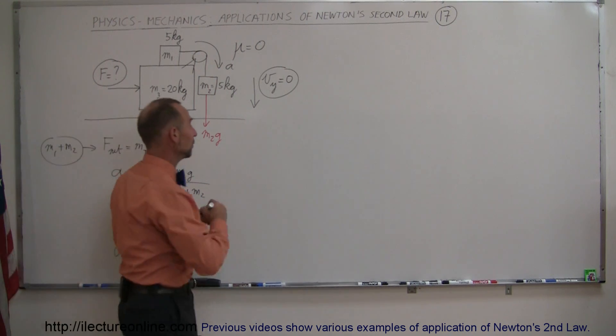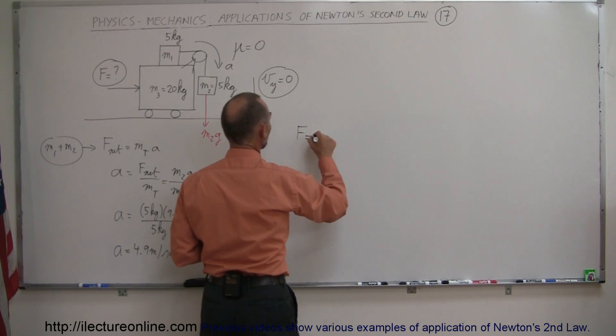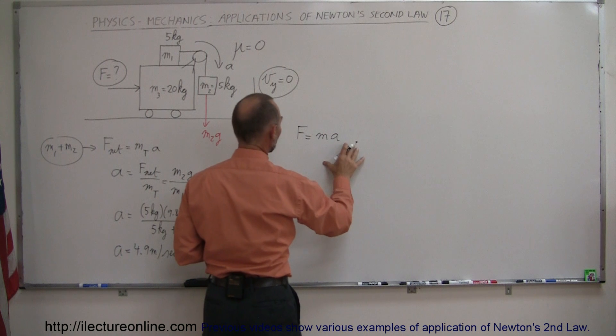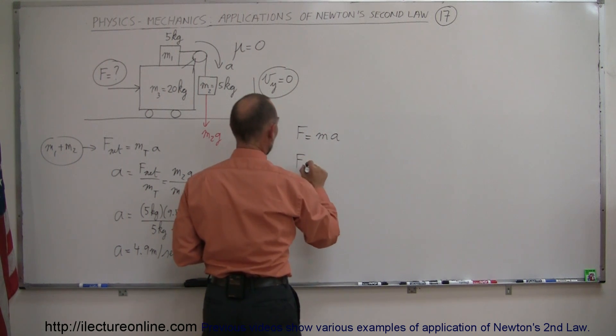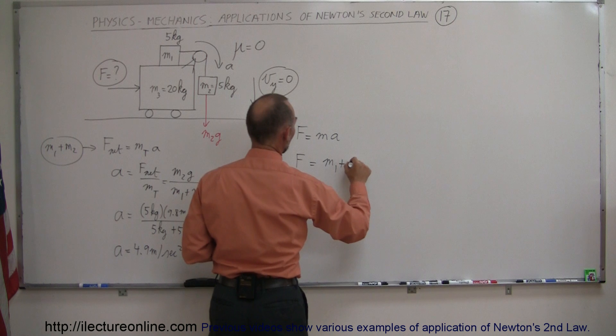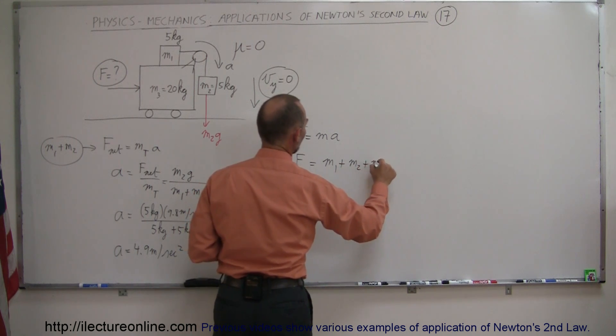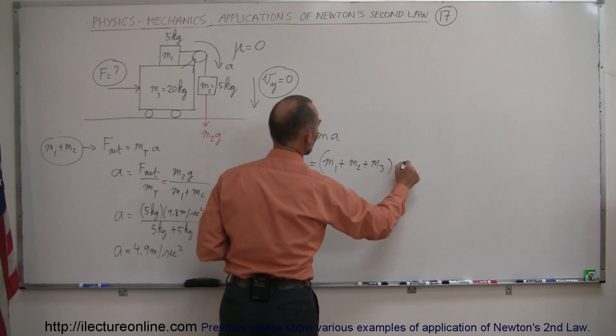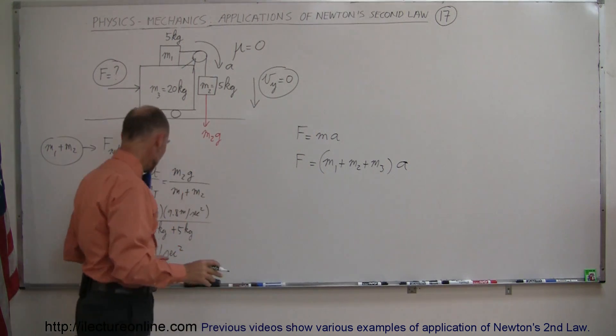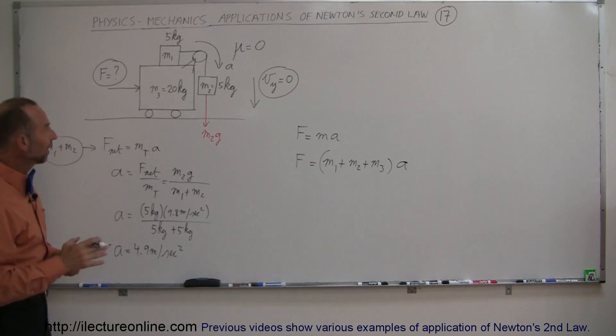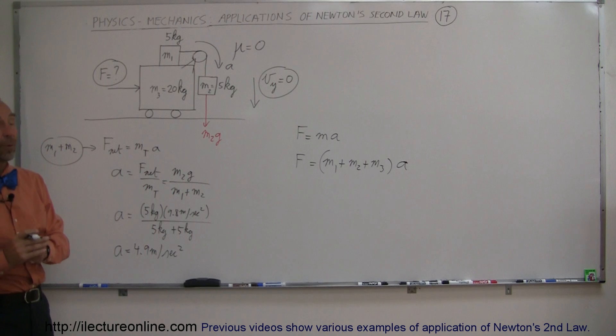So what force is required to accelerate the whole system to the right? Well again we use F equals MA. So now we're going to use the whole system. So F required is equal to the total mass which is M1 plus M2 plus M3 times the acceleration that the whole system would need equal to this for M1 and M3 not to move relative to each other.